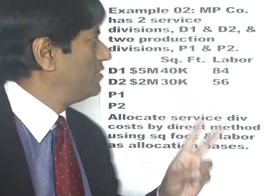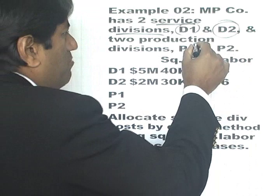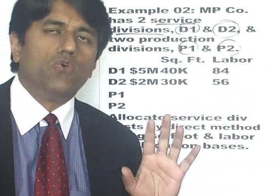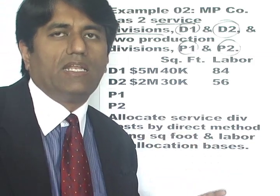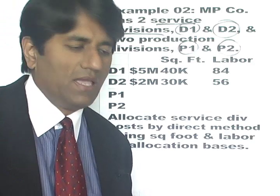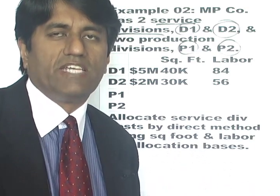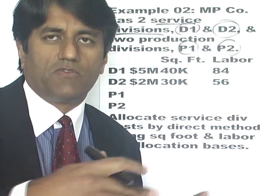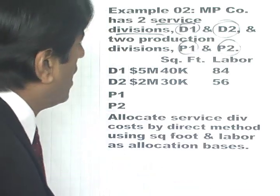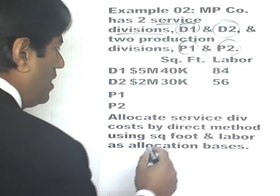Here we have a firm which has two service divisions, D1 and D2, and two production divisions, P1 and P2. The production divisions use the service divisions, so the service divisions' costs have to be assigned to the production divisions. Finally, you want to know how each production division is doing — you want to see the total cost for that division and compare it to revenues to get some idea of profit. You can't ignore the cost of the service divisions because the production divisions are using them.